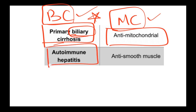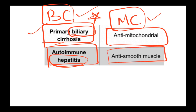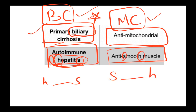Autoimmune hepatitis affects the liver. The antibodies seen here are anti-smooth muscle antibodies. You can remember this as H-S: H for hepatitis (first letter) and S for smooth (first letter), and then SH — S for smooth and H as the last letter of hepatitis. So hepatitis has smooth muscle antibodies.